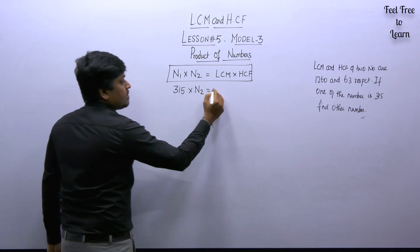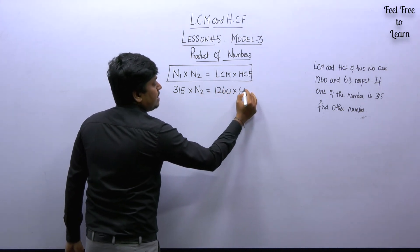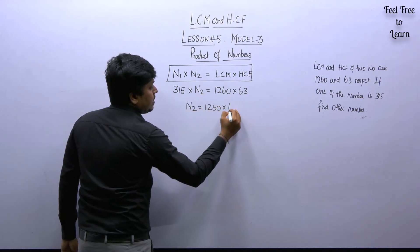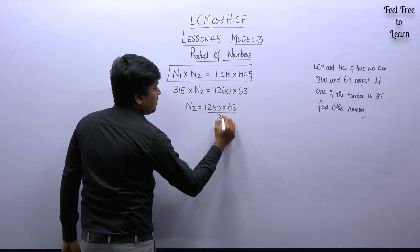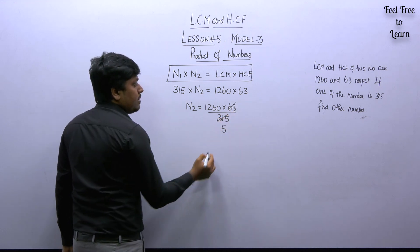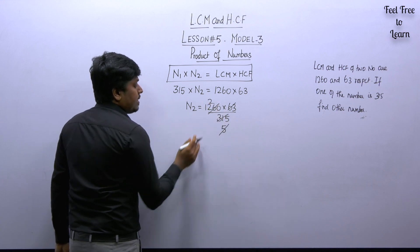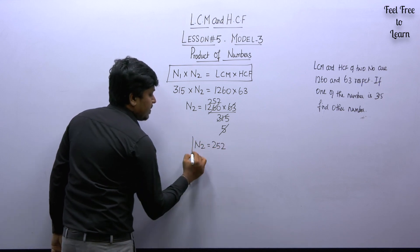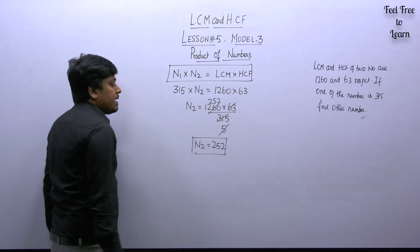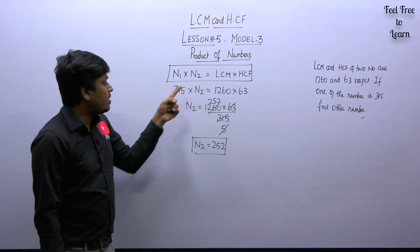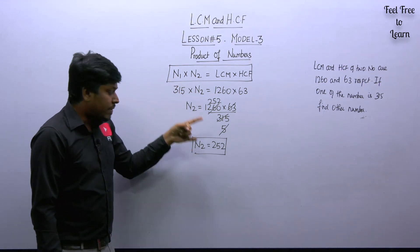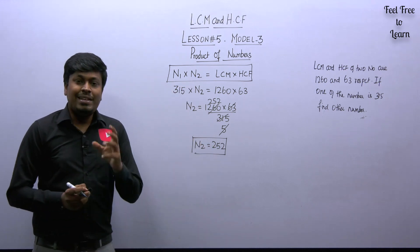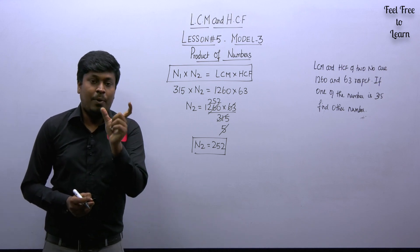Let the second number be N2. So N2 = (LCM × HCF) ÷ first number = (1260 × 63) ÷ 315. Cancelling using the 5-times table, this simplifies to 252. So the second number is 252. The first number was given as 315, and we found the second number to be 252.